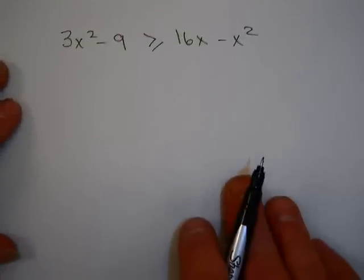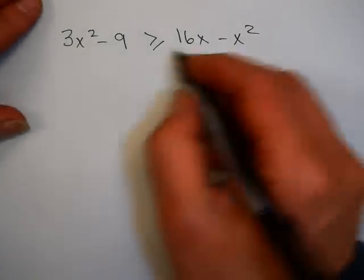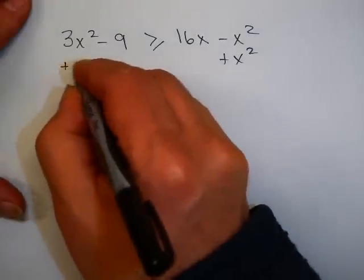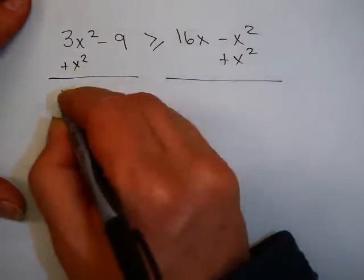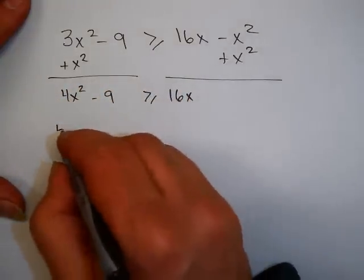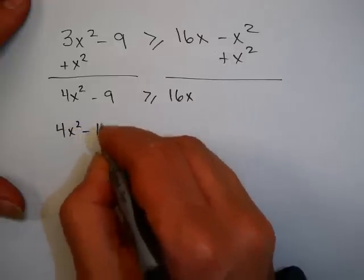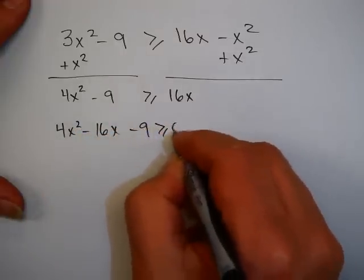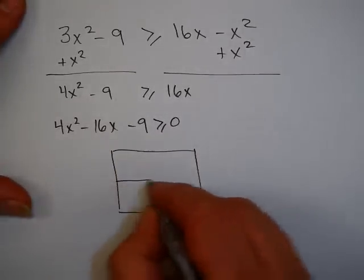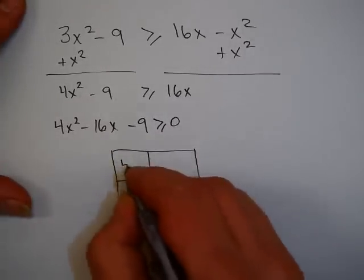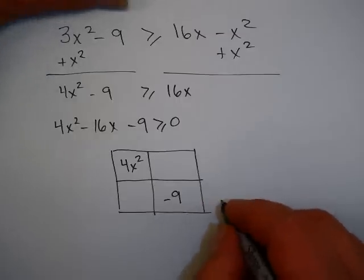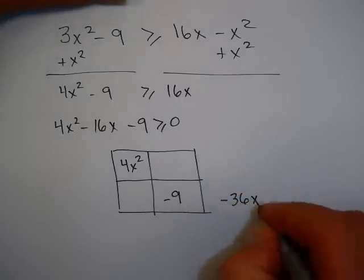Now, last one. I'd like you to try this yourself: 3x² - 9 > 16x - x². You might want to pause the video and then come back in a moment. Okay, let's add x² to both sides. Subtract 16 from each side, 16x. And you say, wait a minute, I don't know how to do this. But remember, you can use the box method to help you factor if you need to. 4x² minus 9, that's going to give me -36x².